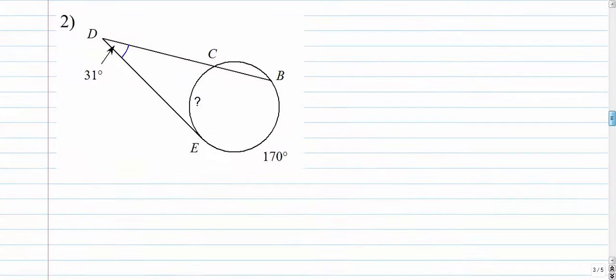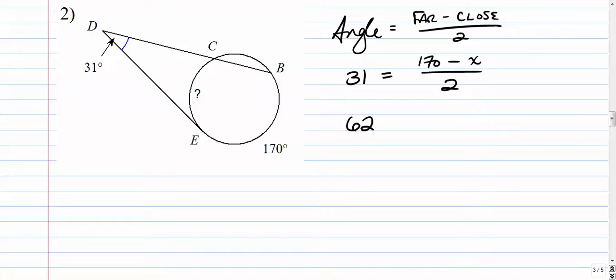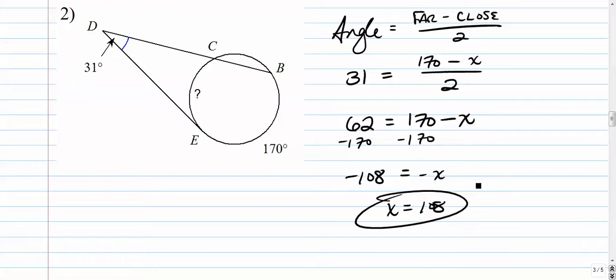Number two: angle equals far away arc minus close arc over two. 31 is equal to 170 minus x over two. Multiply by two on both sides, you get 62 is 170 minus x. Let's get the 170 over to the left, so we'll subtract. That gives us negative 108 is negative x, so x is positive 108.